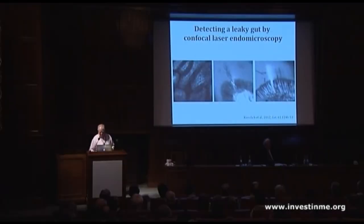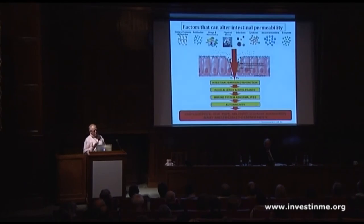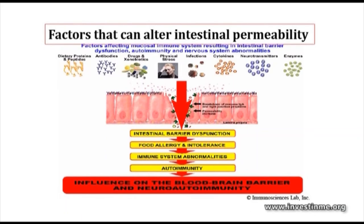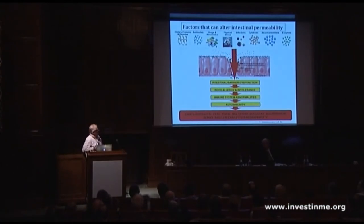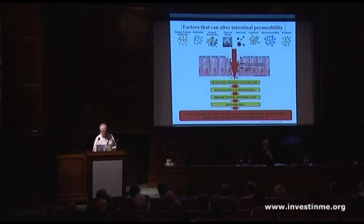In terms of things that can cause a leaky gut: dietary proteins and peptides, antibodies and drugs, physical stress, infections, cytokines, neurotransmitters, and enzymes — all can have a negative impact on gut barrier integrity. Once the barrier is breached, there's an immediate cascade of events resulting in immune system abnormalities, chronic stimulation, and overstimulation leading to inflammation. This could then set the stage for autoimmunity, which could influence the blood-brain barrier. There are lots of questions that need to be addressed to substantiate this, but at least it's a feasible pathway to investigate.